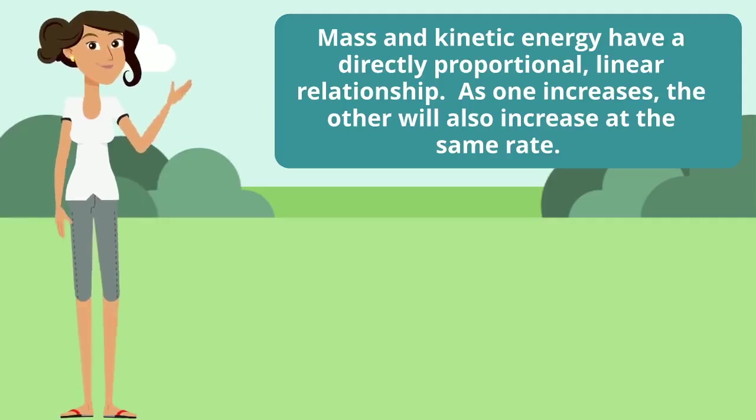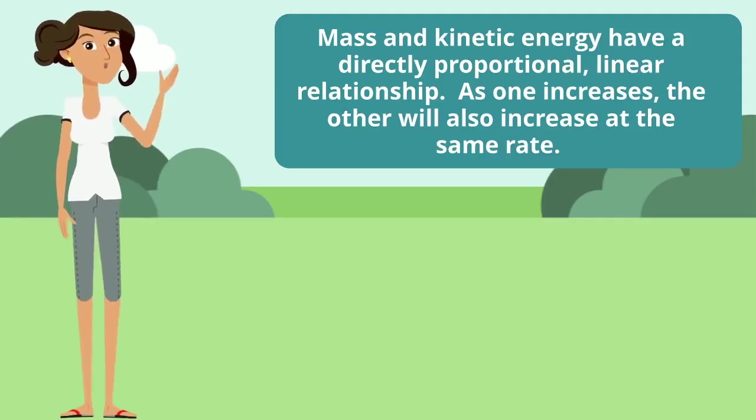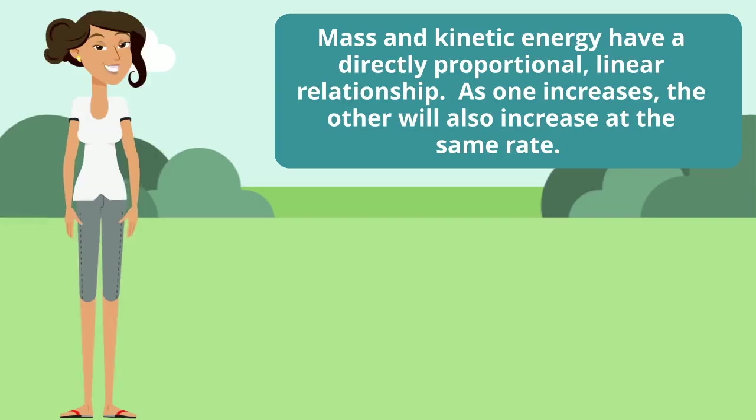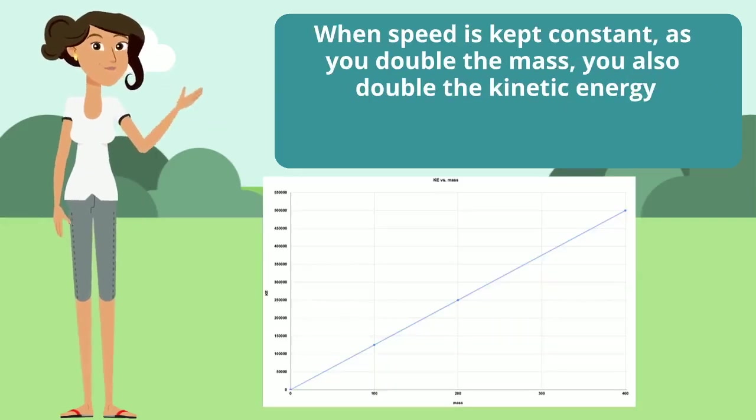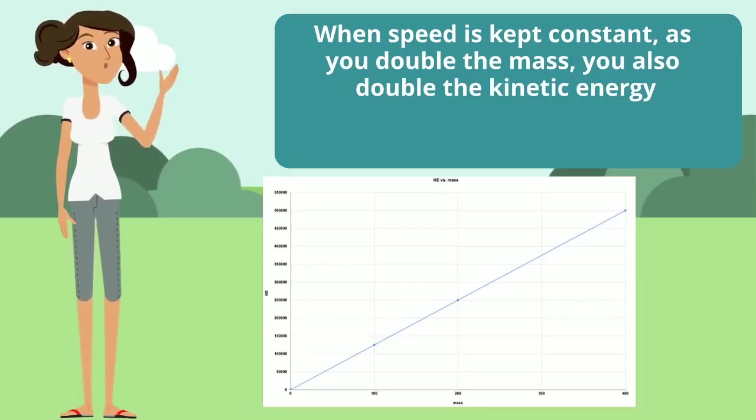Mass and kinetic energy have a directly proportional, linear relationship. So that means as one increases, the other will also increase at the same rate. When the speed is kept constant, as you double the mass, you also double the kinetic energy.